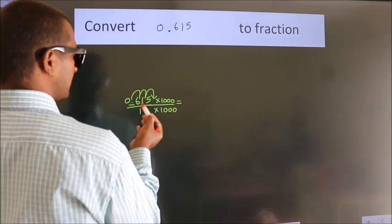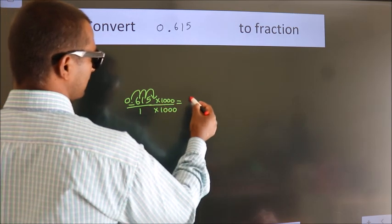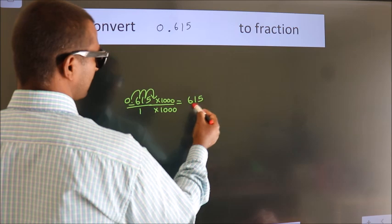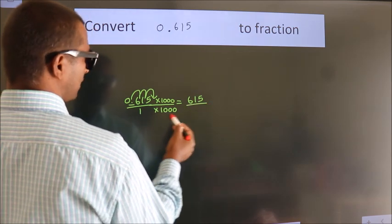Next, 0.615 into 1000 is 615. 1 into 1000 is 1000.